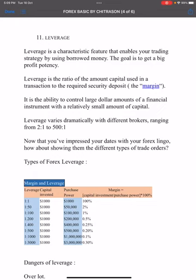Now suppose 1:200 leverage — your $1,000 becomes 200 times the purchase power. With 1:500, your $1,000 becomes 500 times, so you have $500,000 in purchase power. Higher leverage multiplies your buying capacity significantly.